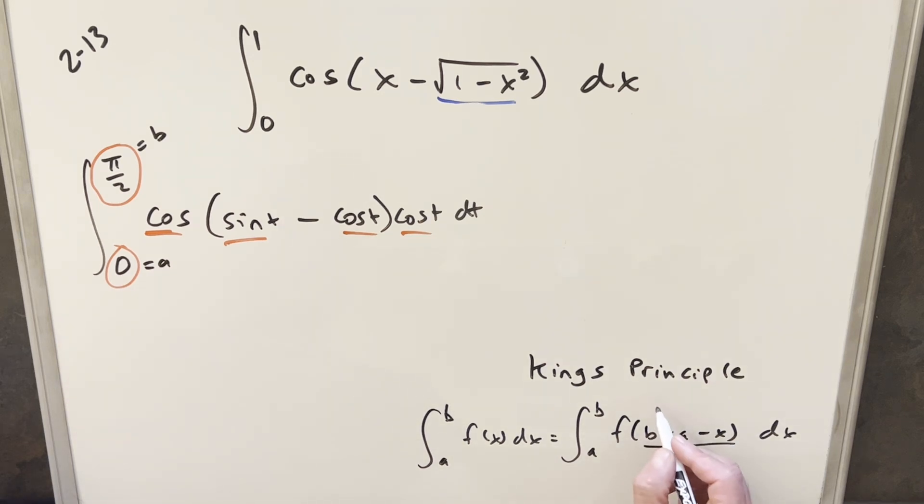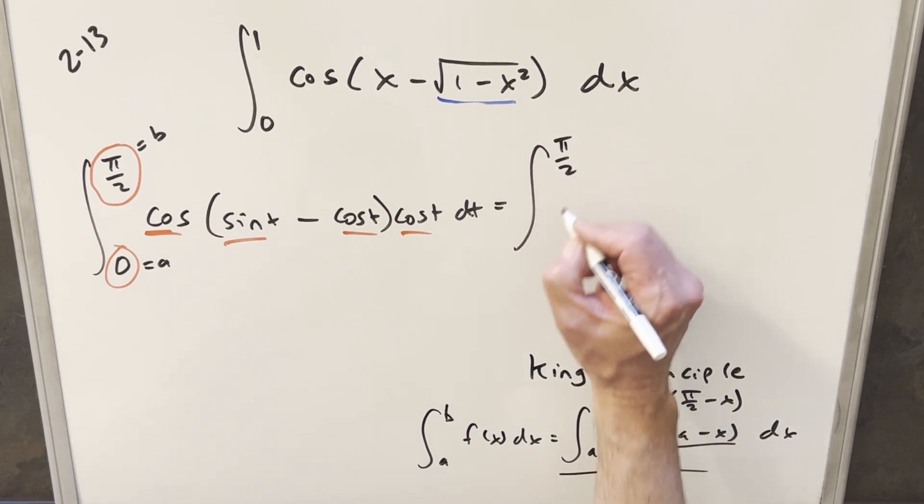So for this over here, this is going to become b plus a is going to be pi over 2, so this thing here is going to be just f of pi over 2 minus x. So we'll go ahead and we'll just use this and transform this so the bounds stay the same, we're still going from our a to b values, we're going 0 to pi over 2,